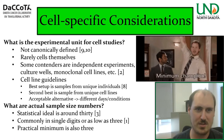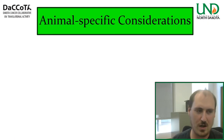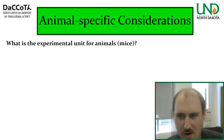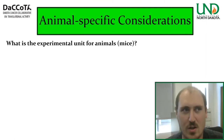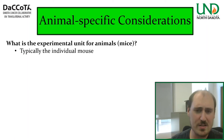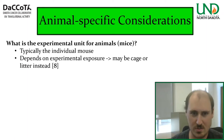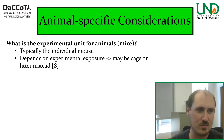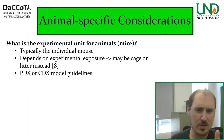Moving on to animal-specific considerations. What's the experimental unit for animals? We'll look at mice in particular, but this generalizes to other animals like zebrafish, etc. Unlike cell studies, it is typically the individual animal — the individual mouse. But it's not always the case. It depends on your experimental exposure and level. Some might be at the cage level, or maybe the litter level — say you treat the mom and look at the offspring.